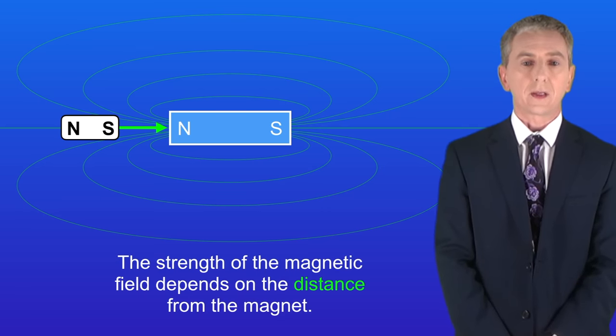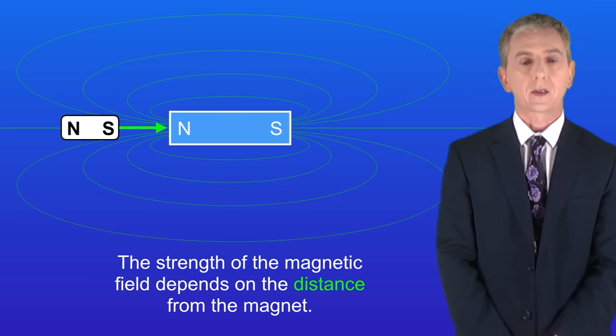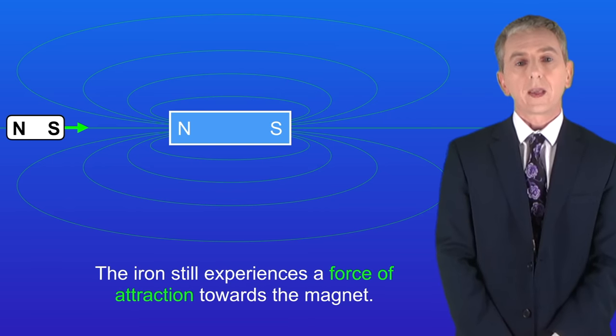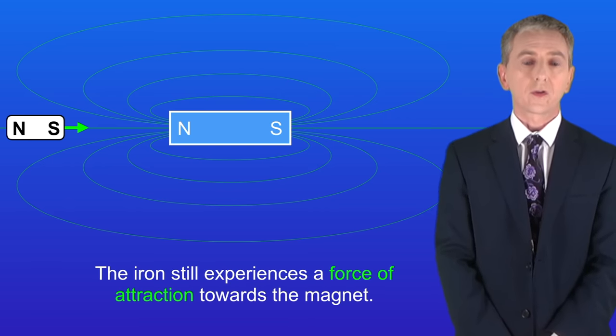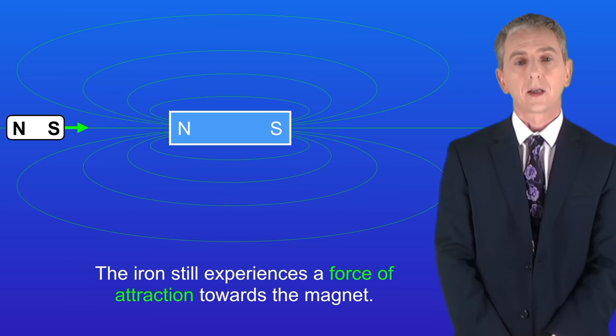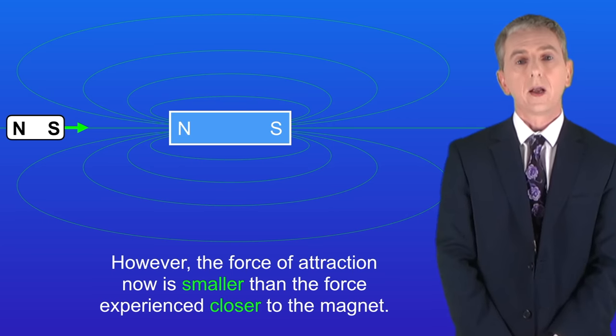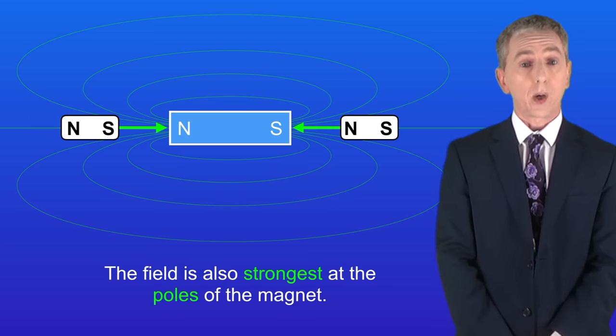Now the strength of the magnetic field depends on the distance from the magnet. So here's another piece of iron but this one is further from the magnet. As you can see the iron still experiences a force of attraction towards the magnet. However the force of attraction now is smaller than the force experienced closer to the magnet. The field is also strongest at the poles of the magnet.